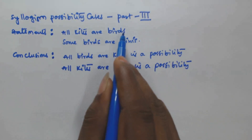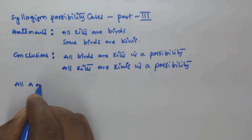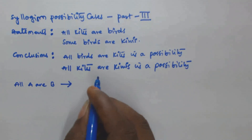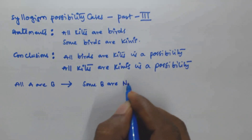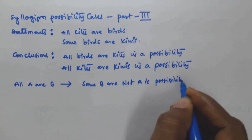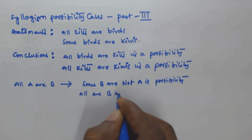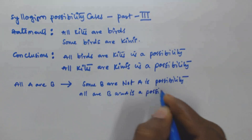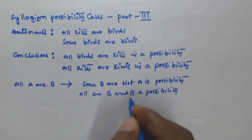It is given that all kites are birds — this is of the form 'all A are B'. If all A are B, the possibility cases we can derive are: 'some B are not A is a possibility', and 'all B are A is a possibility'. I explained these derivations in the previous video.